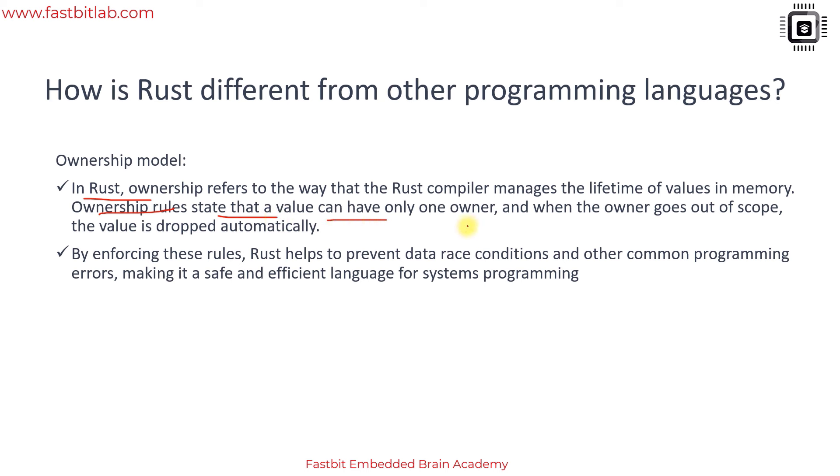Ownership rules state that a value can have only one owner, and when the owner goes out of scope the value is dropped automatically. By enforcing these rules, Rust helps to prevent data race conditions and other common programming errors.